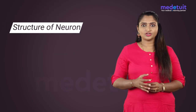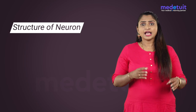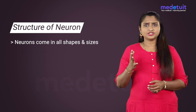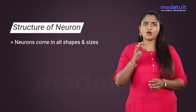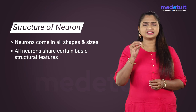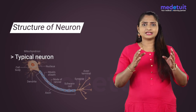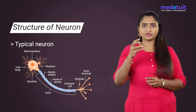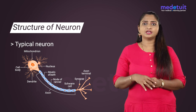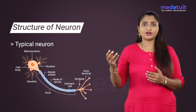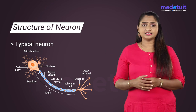Let's discuss the structure of a neuron. As you all know, neurons come in all shapes and sizes, but all neurons share certain basic structural features. Let's consider a typical neuron as an example. It has a cell body, a soma or the perikaryon, dendrites and axons, which have the collaterals and the branches.